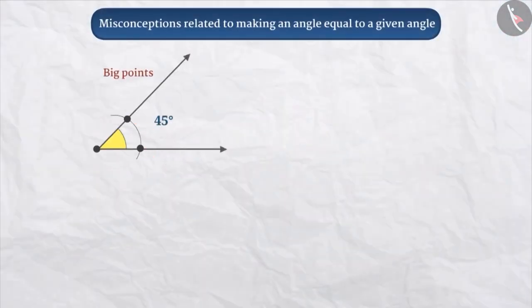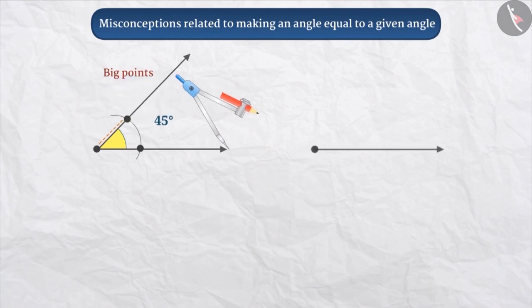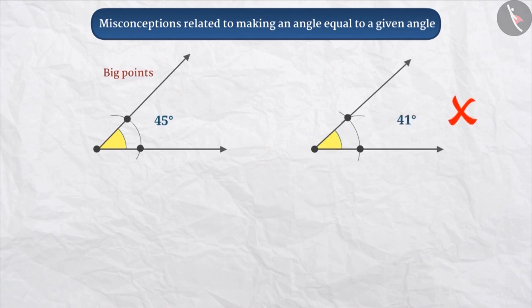Many children make large-sized points. Because of the size of the point, it becomes difficult to take accurate measurements as the pointed end of the compass is not accurately placed. As a result, the angle measurement is wrong.